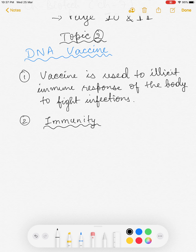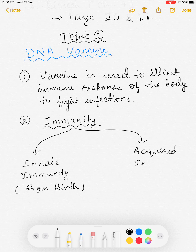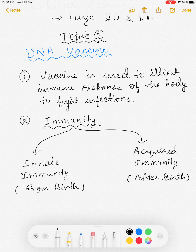If we talk about immunity from a biology point of view, it is broadly divided into two parts: innate immunity and acquired immunity. Innate immunity is the form of immunity we get from birth, whereas acquired immunity is immunity a person acquires after birth through exposure to a pathogen or disease. For example, after recovering from chickenpox, the body acquires immunity and won't get it again.